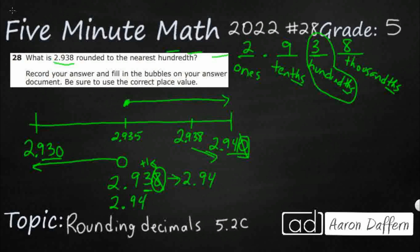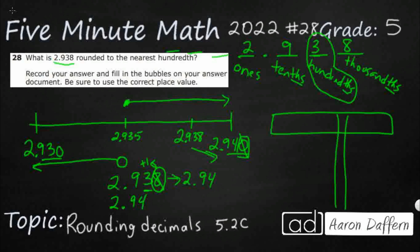So all we've got to do is bubble this in on your answer document. You've got 2 digits to the right and 3 digits to the left, so you're going to have 2 and 94, and then bubble in underneath.